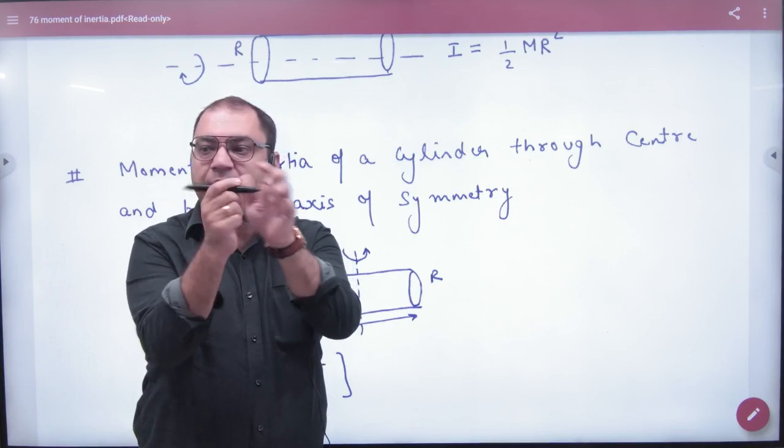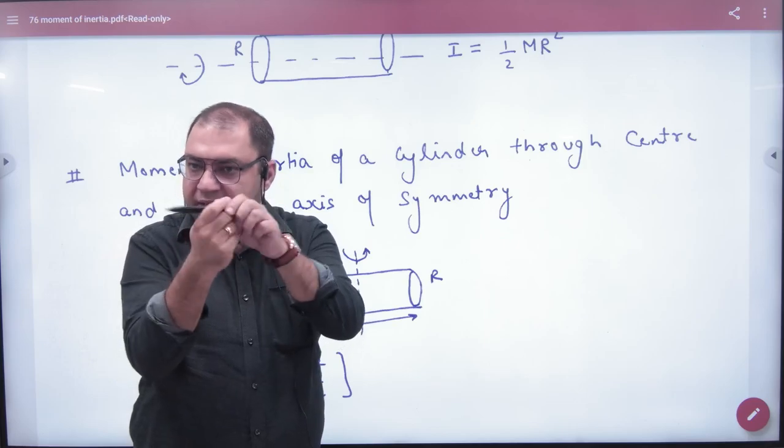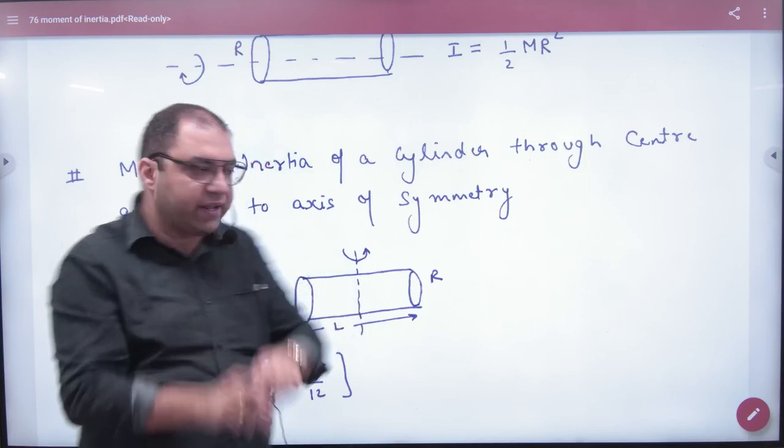Where will the axis pass from here? From the center. If it is like this, then 1/2 MR². And if it will rotate like this, then the axis will pass from here. What will be the answer?